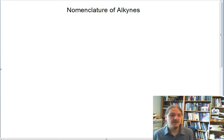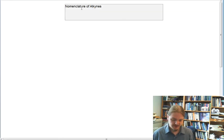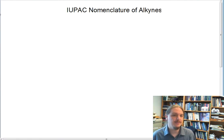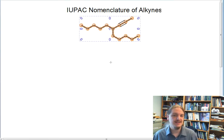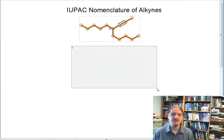So now let's go ahead and talk about the IUPAC nomenclature of alkynes. What happens if we wanted to be able to generate a systematic IUPAC name for this molecule that contains an alkyne functional group?